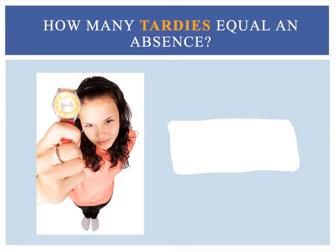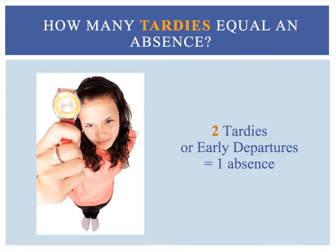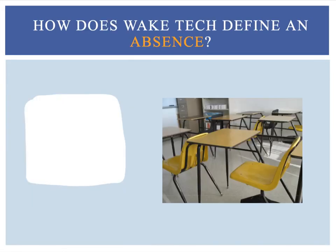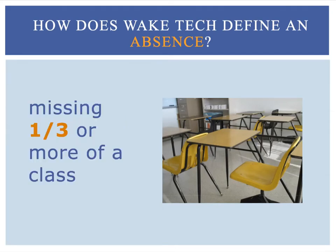How many tardies equal an absence? Pause the video to find the answer, then restart the video to see if you're correct. An absence is recorded if you miss more than one-third of a class. Two tardies, or early departures, equal one absence.